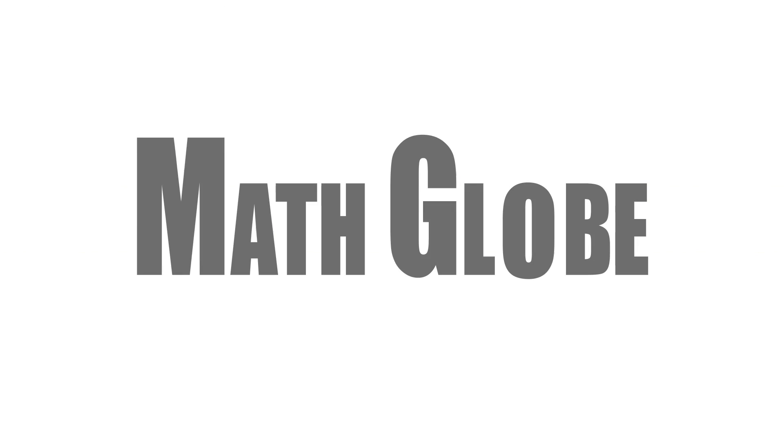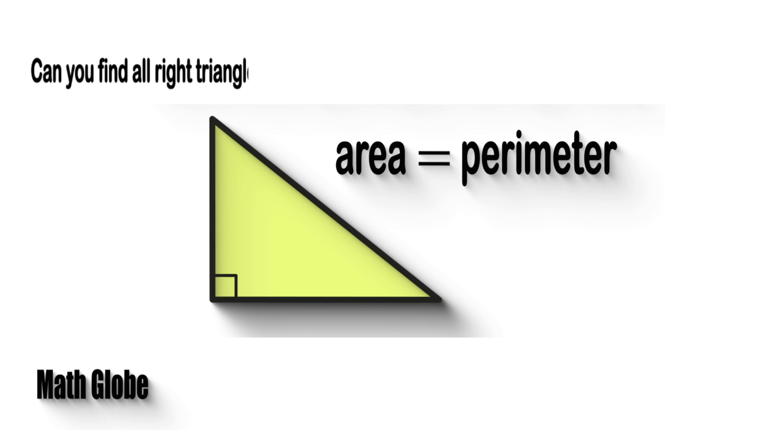Hi, this is Math Globe. Can you find all right triangles with integer sides such that the area and perimeter are equal?